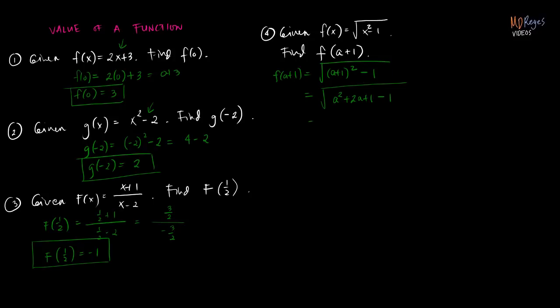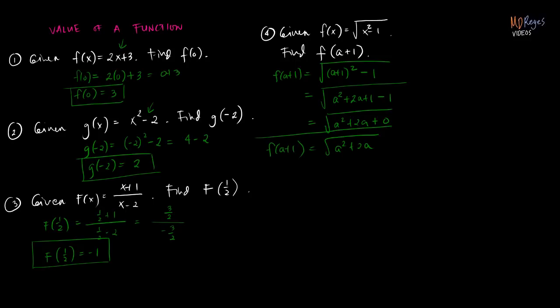Simplifying further, that gives us square root of a squared plus 2a. Combining the constants, 1 minus 1 is 0, so we simply have square root of a squared plus 2a in simplified form, and that is f of a plus 1. Please review the simplification of algebraic expressions, such as expanding this binomial, using patterns or formulas.